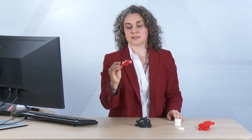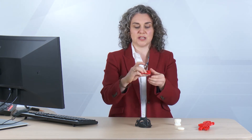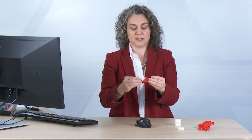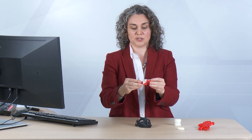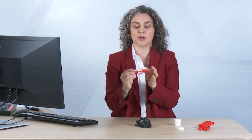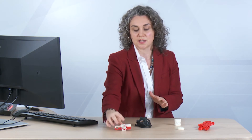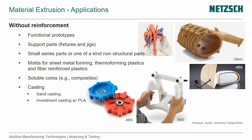Here's another functional part — a clip to close a bag of potato chips. You can see that we can print with two different colors. We don't have to use the second nozzle just for support material. If the design doesn't require support, we can use the two nozzles for two different materials.